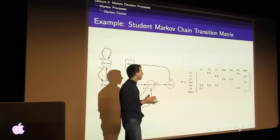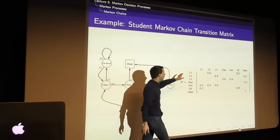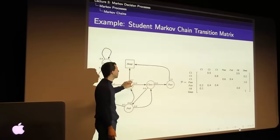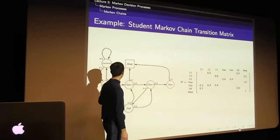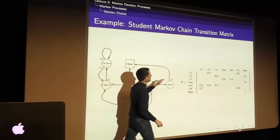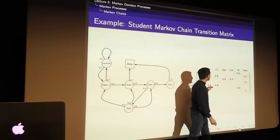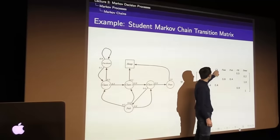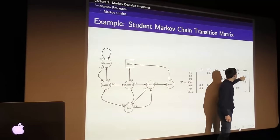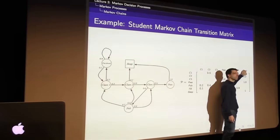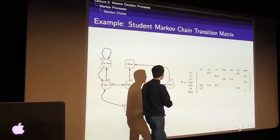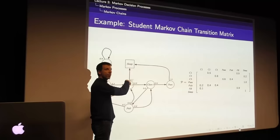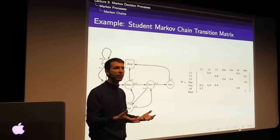The transition matrix is fully described here. For any state we might have been in, it gives the probability of transitioning to any other state. For example, looking at class two: there's a 0.8 probability of transitioning to class three and a 20% chance of transitioning to the sleep state. All the rows together fully describe the entire dynamics of the system.